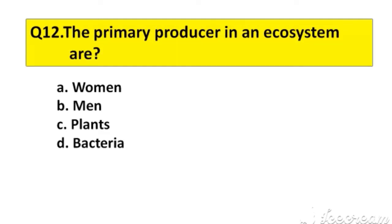Question number 12. The primary producers in an ecosystem are: A. Women, B. Men, C. Plants, D. Bacteria. The right answer is option C, Plants.